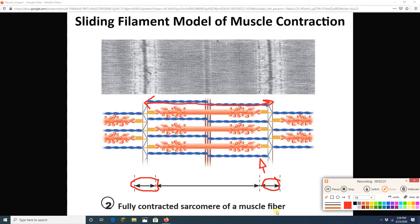In contraction, everything gets smaller except for the A-band. The A-band doesn't change. But the I-band gets shorter. The H-zone gets shorter. The sarcomere gets shorter.